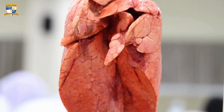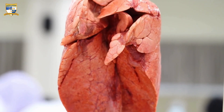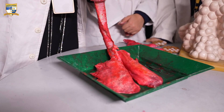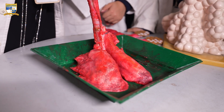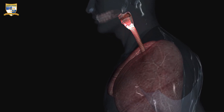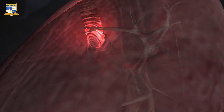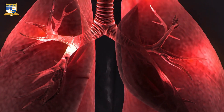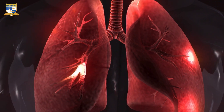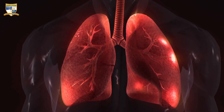Inhalation occurs when the diaphragm contracts, expanding the chest cavity and drawing air into the lungs, where oxygen diffuses into the bloodstream. During exhalation, the diaphragm relaxes, decreasing lung volume and forcing carbon dioxide from the blood into the alveoli to be expelled. This process ensures continuous gaseous exchange, essential for respiration.